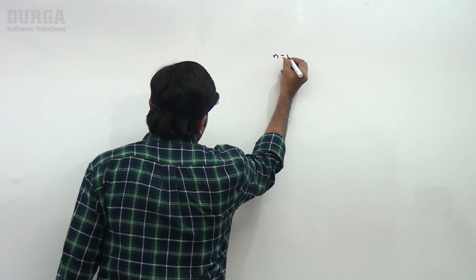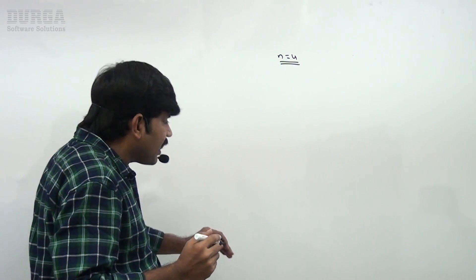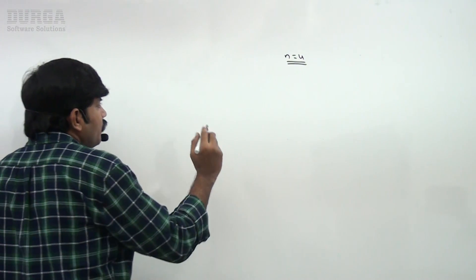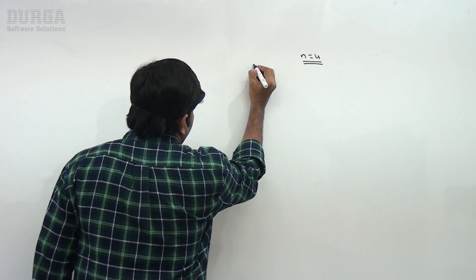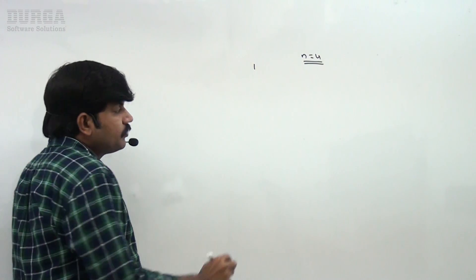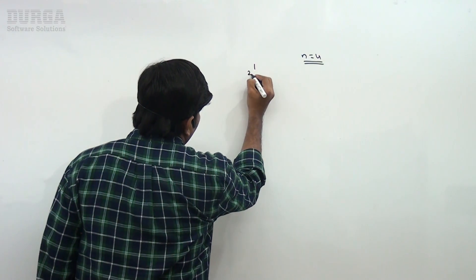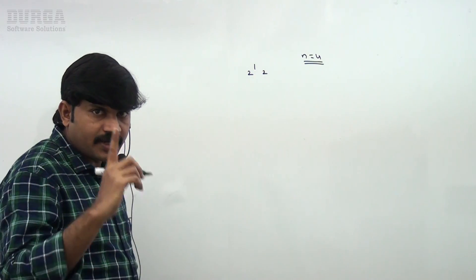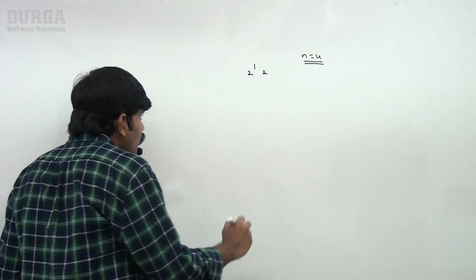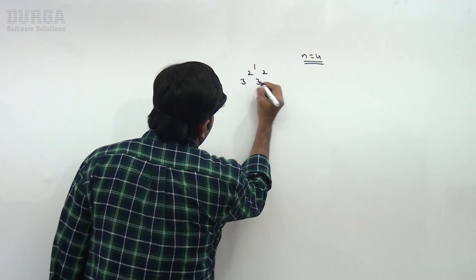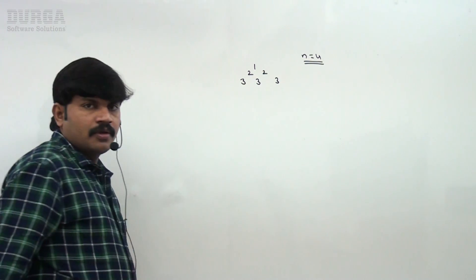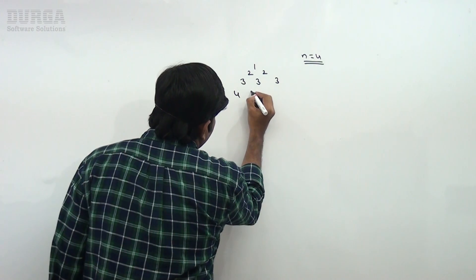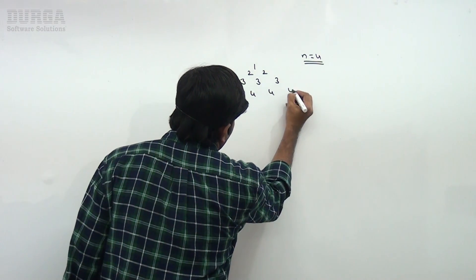If n is equal to 4, I want to print digits: 1, 2, 3, 4. The pyramid style is: first row contains 1; second row contains 2, 2; third row contains 3, 3, 3; fourth row contains 4, 4, 4, 4.